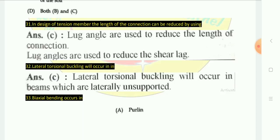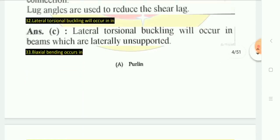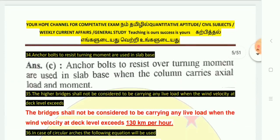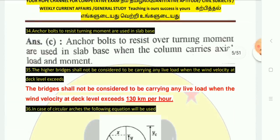Lateral torsional buckling will occur in beams which are laterally unsupported. Biaxial bending will occur in a column at the end. Anchor bolts used to resist the overturning moment are used in slab base when the column carries axial load and moment.